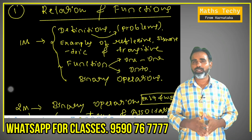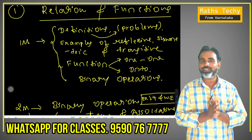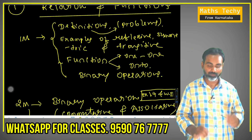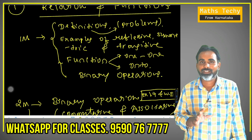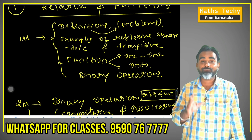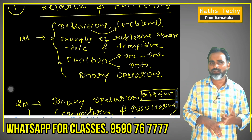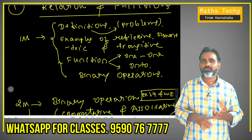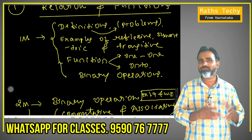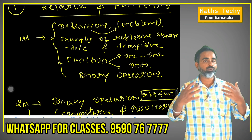Let's see relation and function. In the first chapter, we know that concept in detail. Relation and function is the one marks problem. Common definitions — the definition is based on the NCIT. Define binary operation, define one-to-one function, define relation, define objective function, equivalence relation, reflexive, symmetric and transitive. As per the NCIT, don't write in your own words.